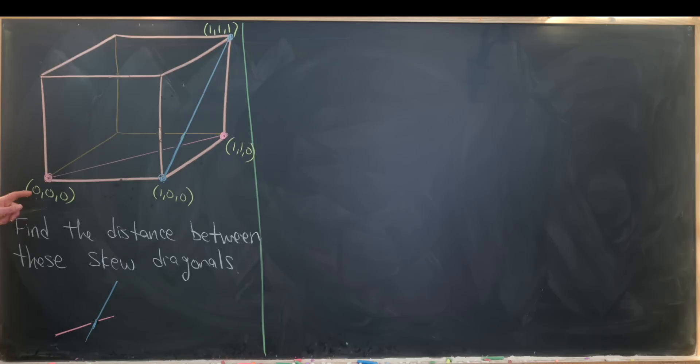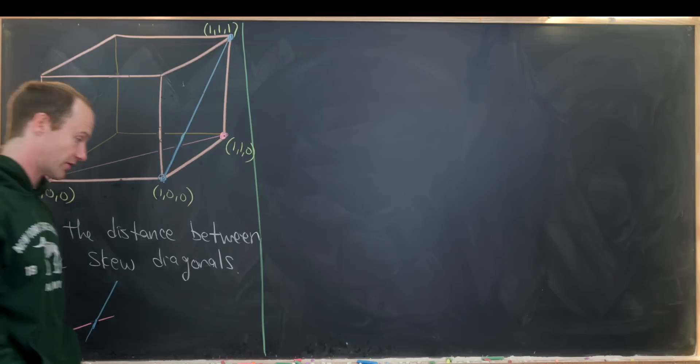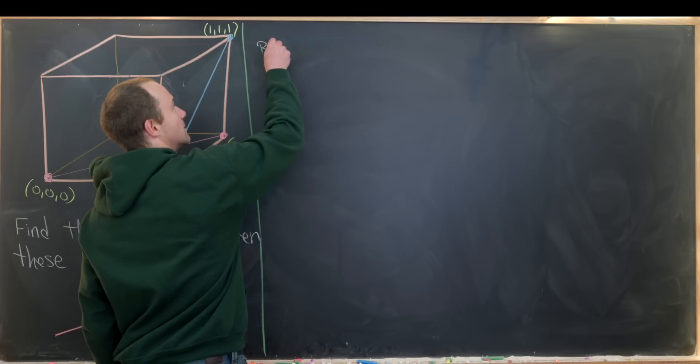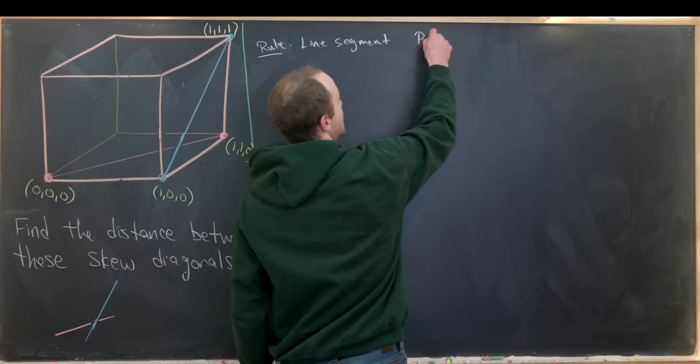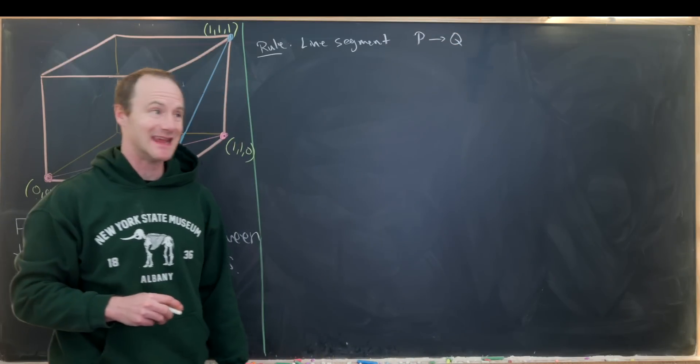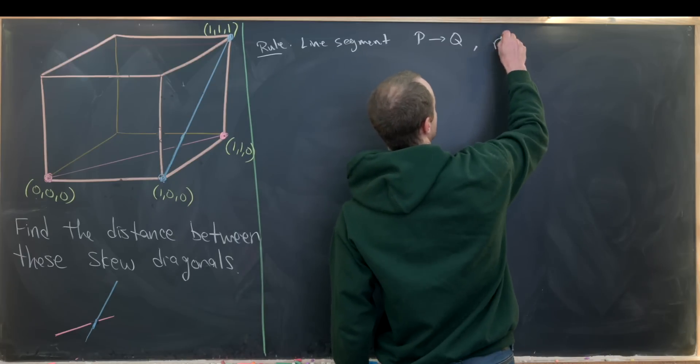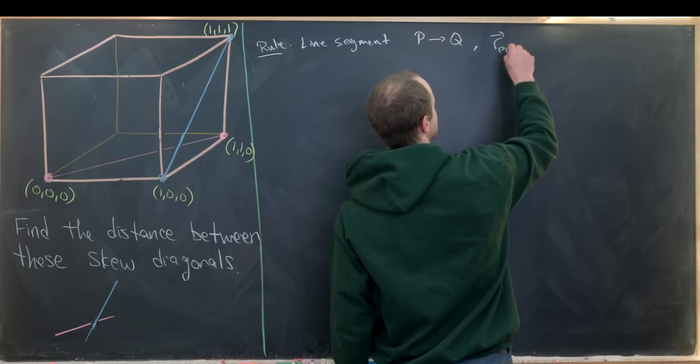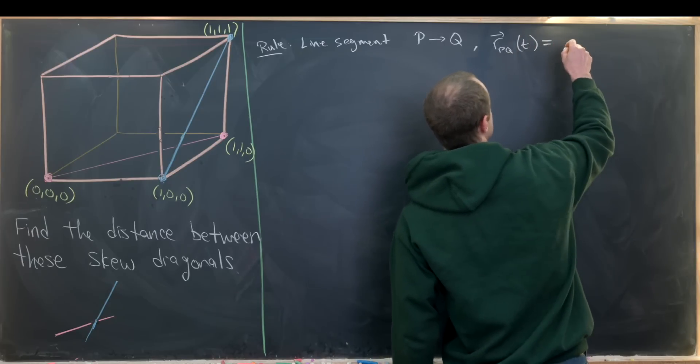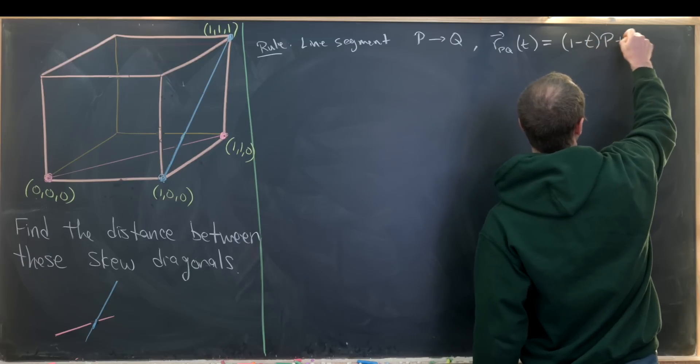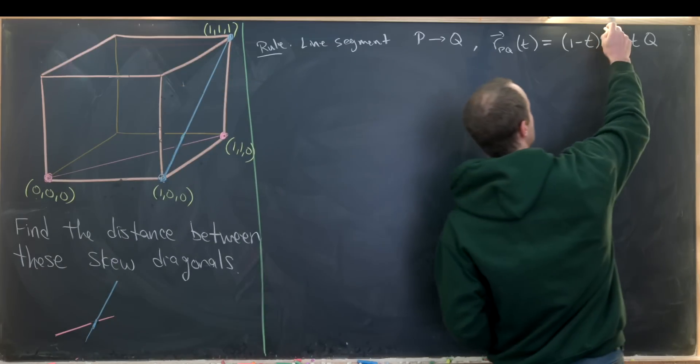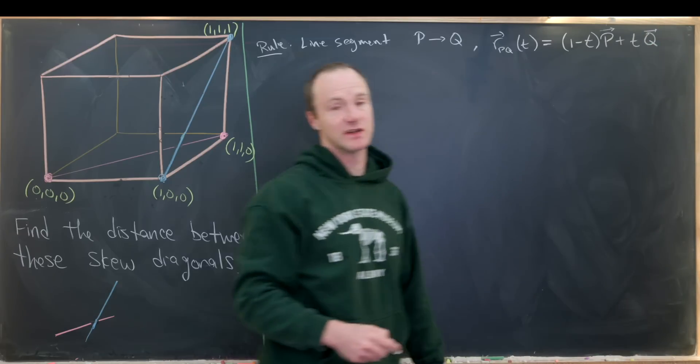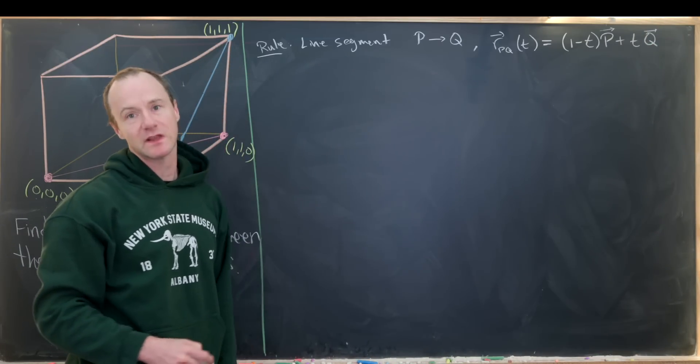So let's maybe start with this pink line segment and parametrize that as a curve in R3. And we're going to use maybe the following rule, and that is the line segment from P to Q, so in other words, starting at P and ending at Q can be parametrized by the following curve. So I'll write it as R_PQ of T. So this is going to be equal to 1 minus T times P plus T times Q, where this isn't quite what we want. We really want P interpreted as a vector and Q interpreted as a vector instead of as a point. So that's what we'll use here.